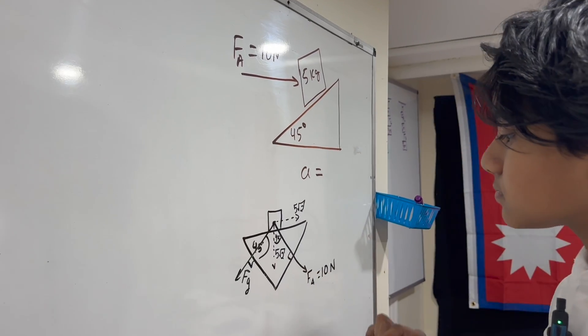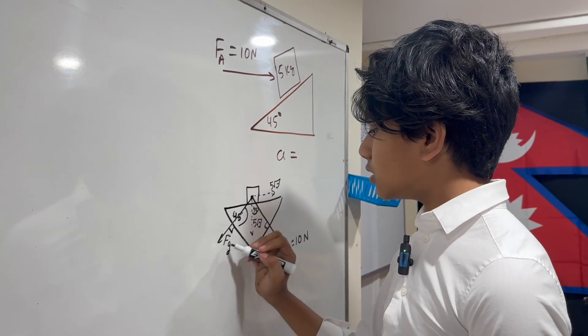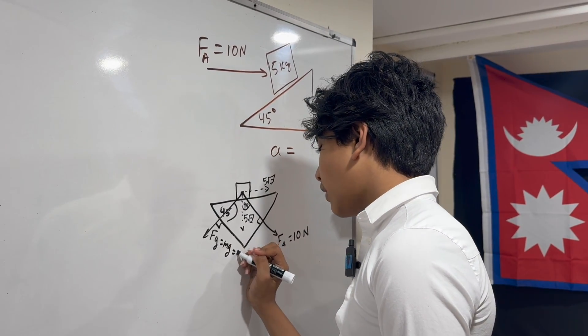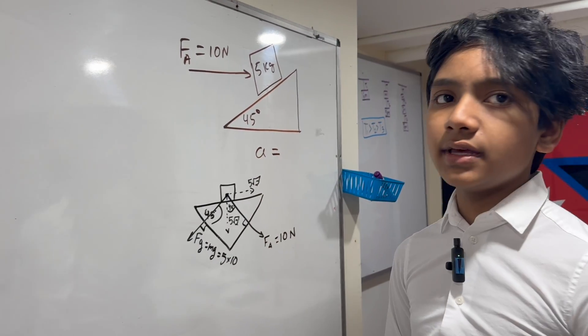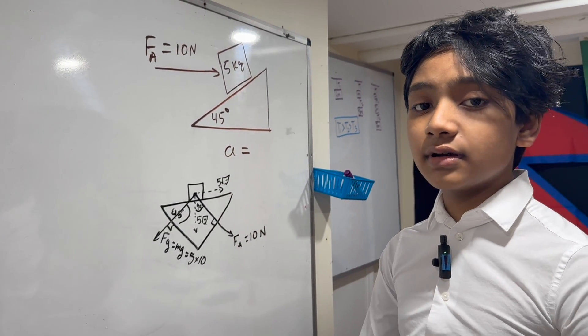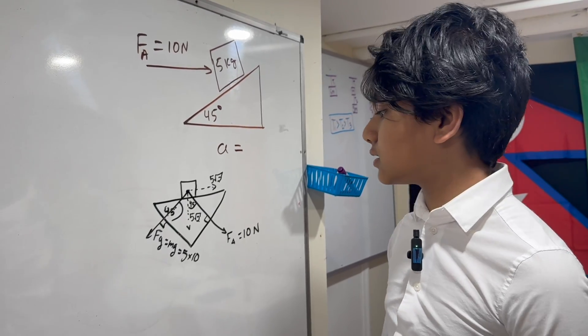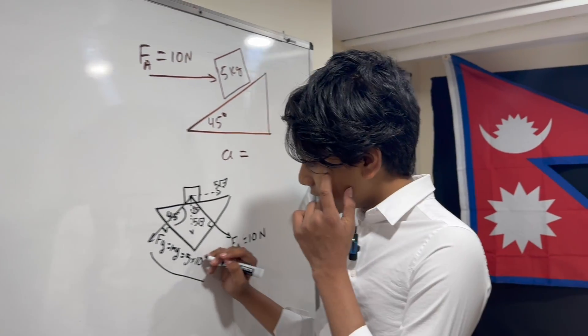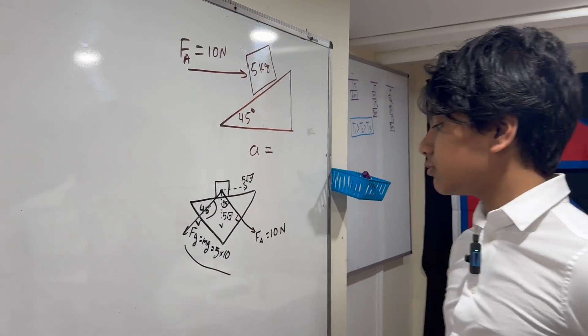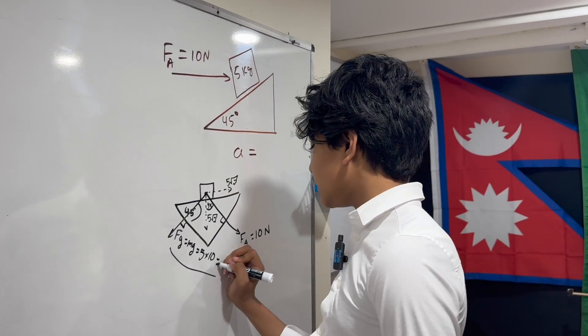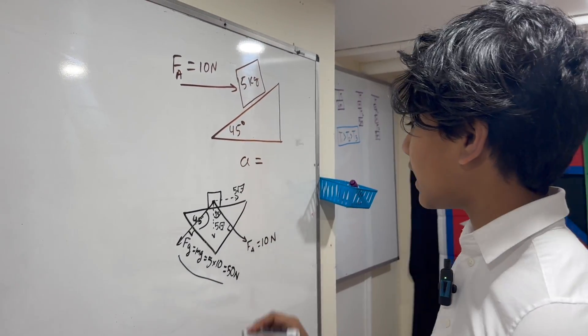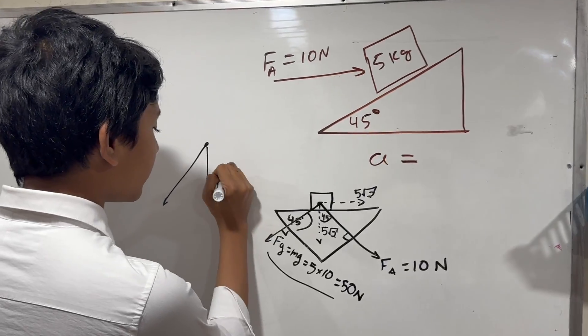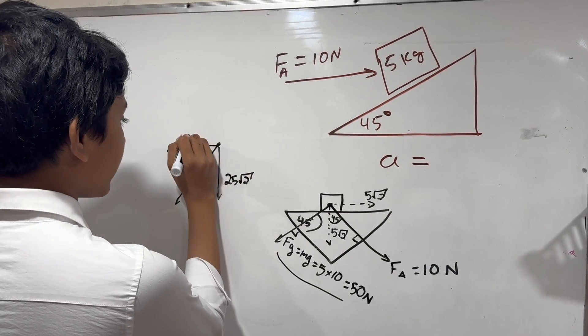Meanwhile, we have FG. FG equals MG, so that's going to be 5 times 10. Actually, it turns out that it cancels out in the end and you still get the same answer no matter what. So FG equals 5 times 10 equals 50 newtons. That gets split between 25 root 2 and 25 root 2.